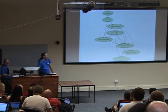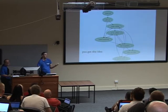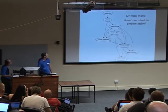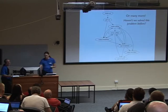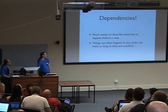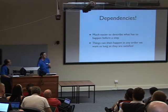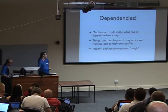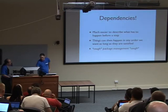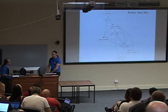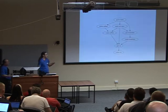This is a solved problem. Dependencies are a really easy way to define what has to happen before anything else. As long as the dependencies are satisfied, it doesn't really matter what order things go in as long as some come first. Rather than going all around the place on different paths, all we do is define a simple list of dependencies.